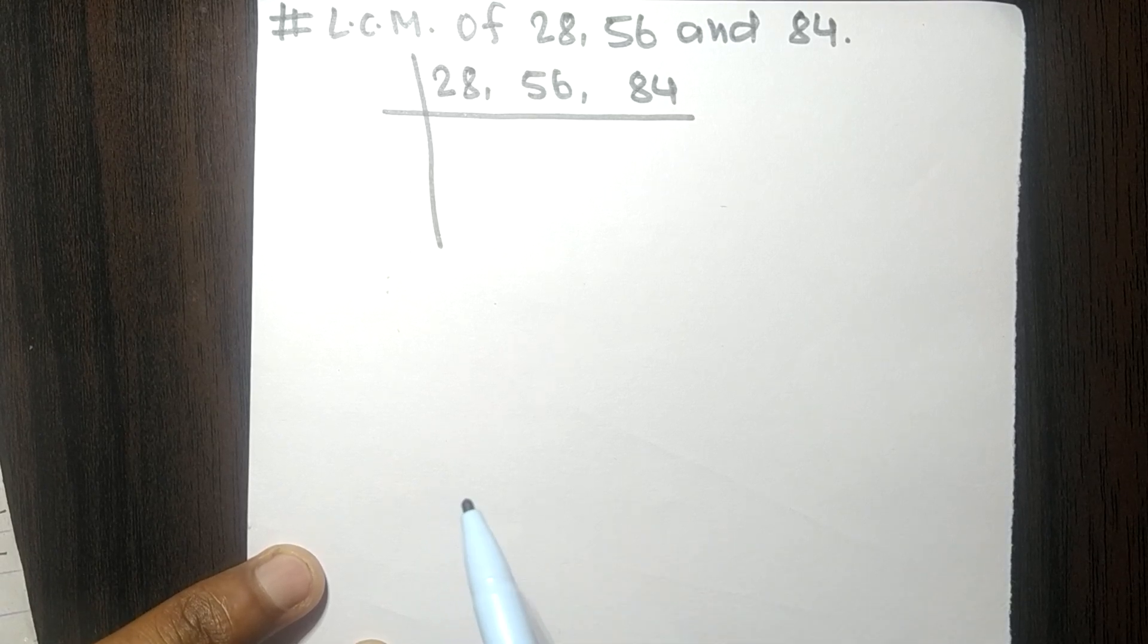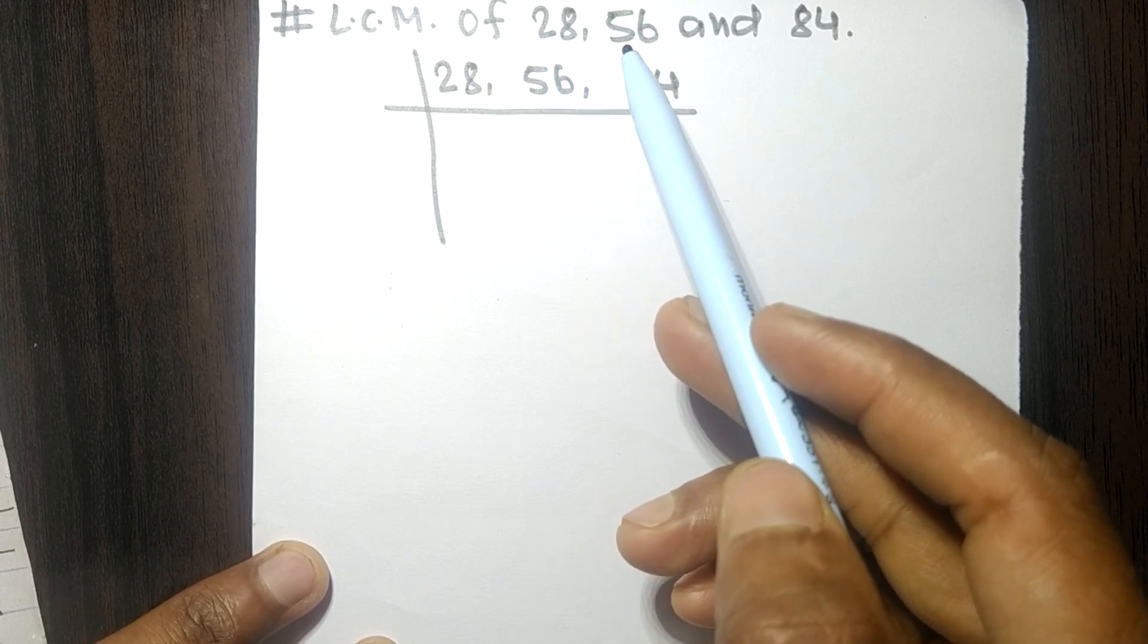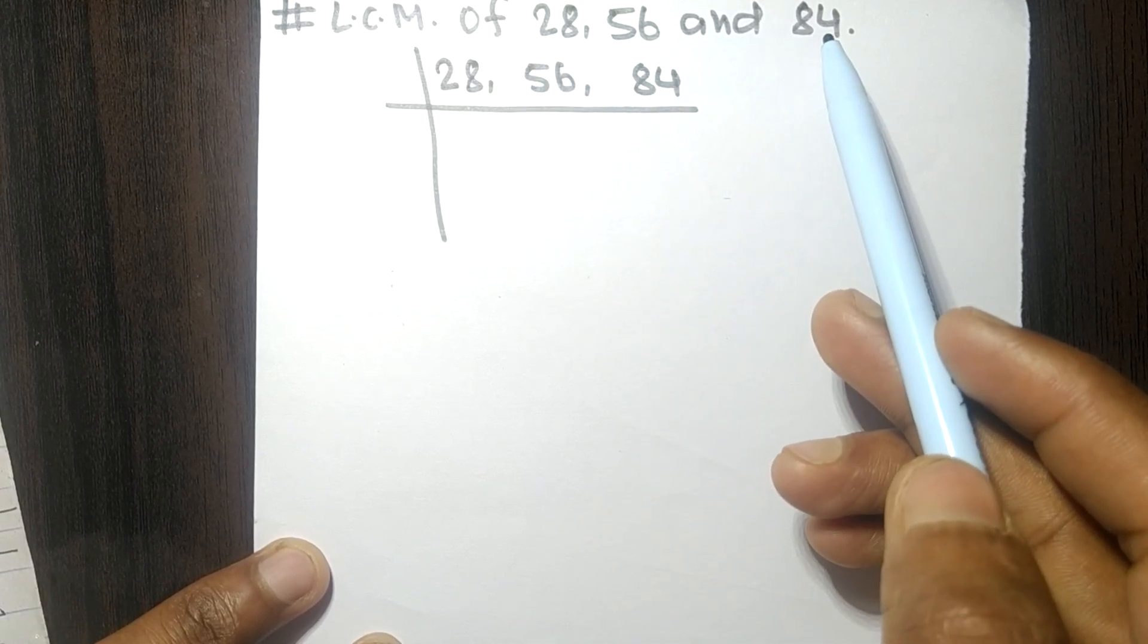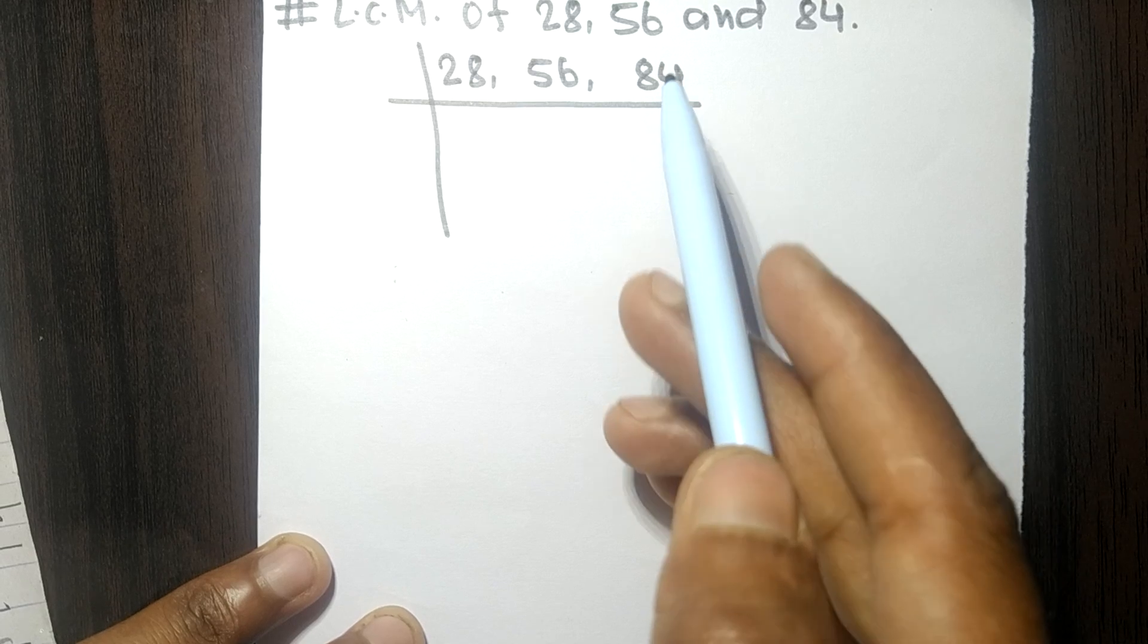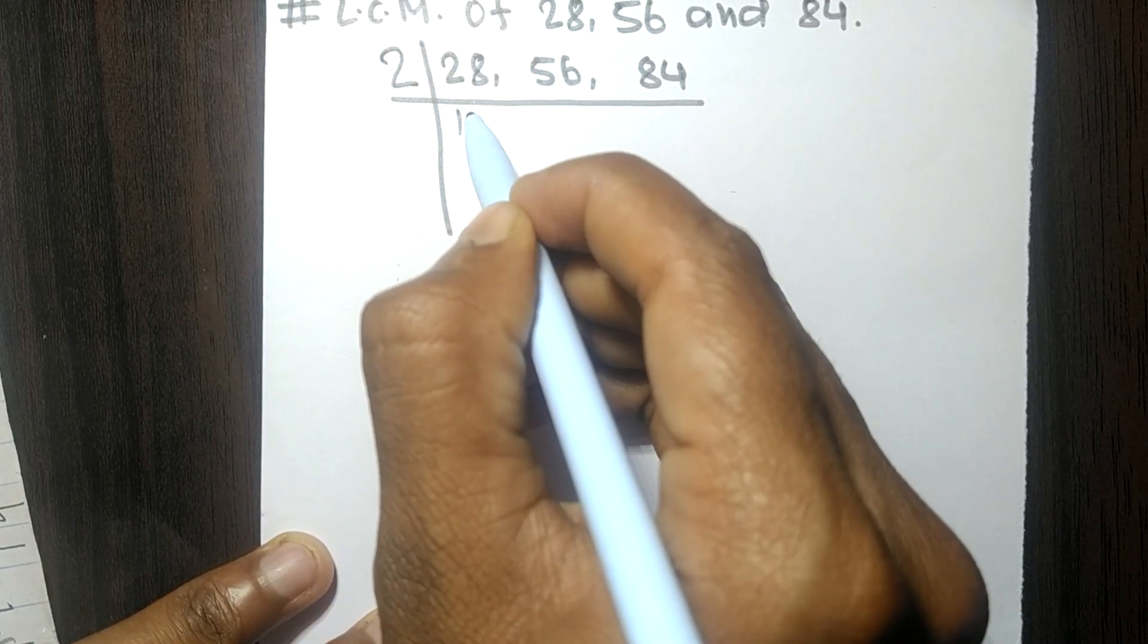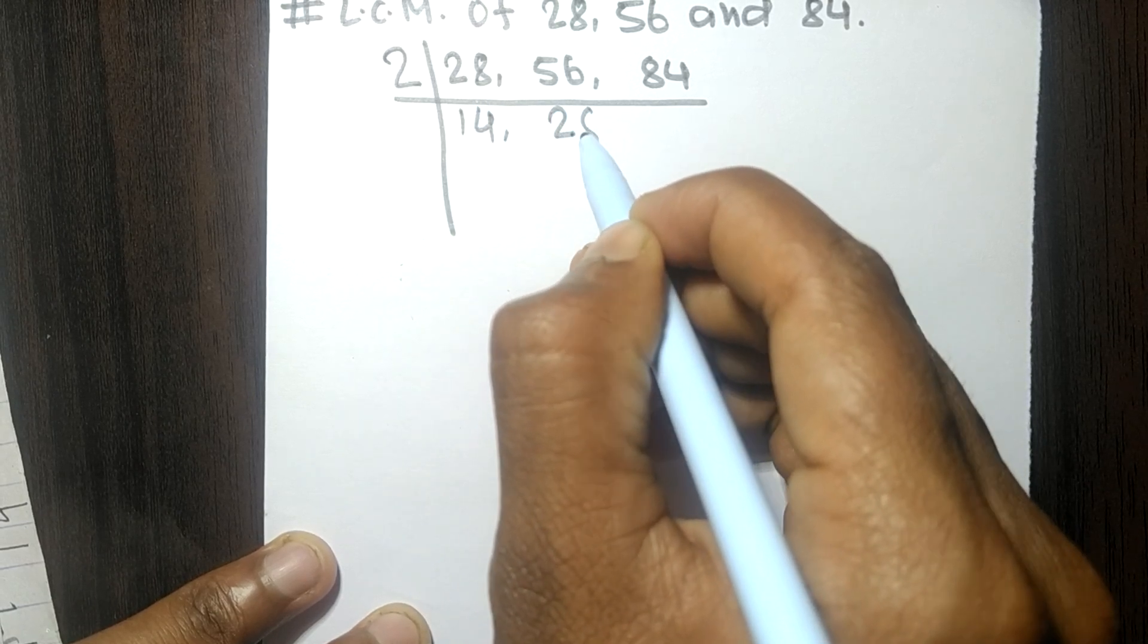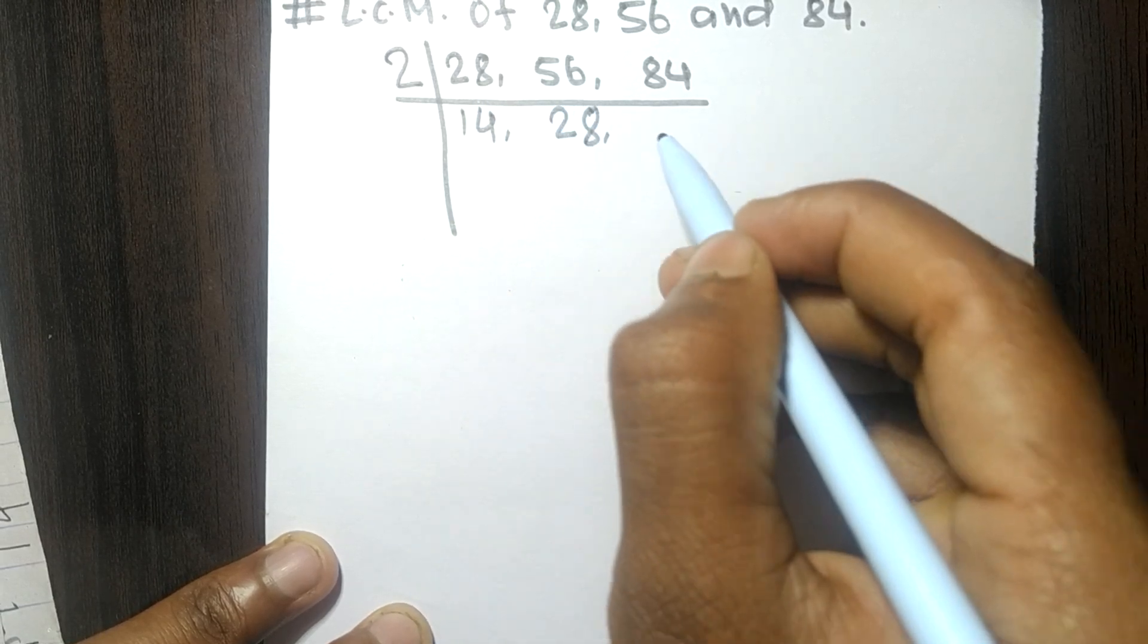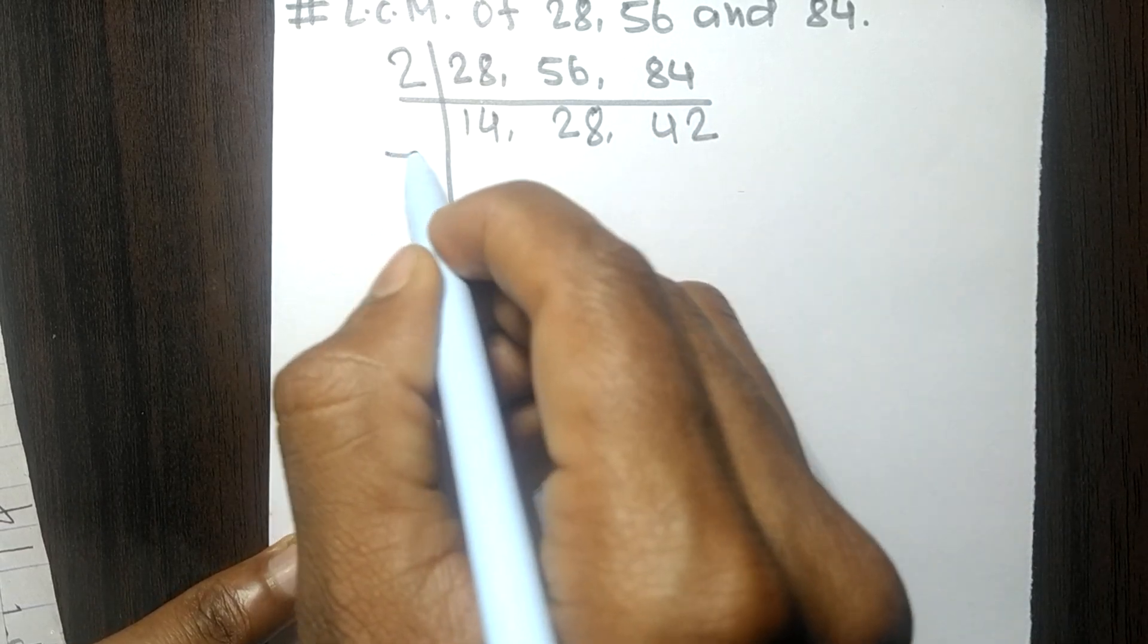Today in this video we shall find the LCM of 28, 56, and 84. These all numbers are exactly divisible by 2, so 2 times 14 means 28, 2 times 28 means 56, 2 times 42 means 84.